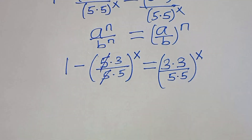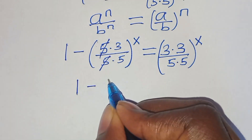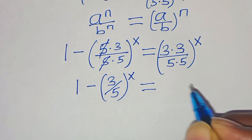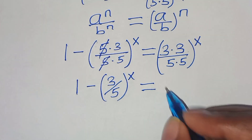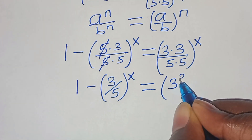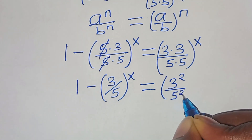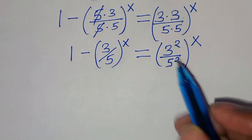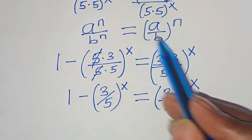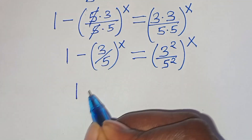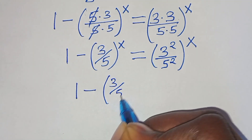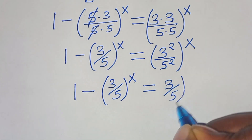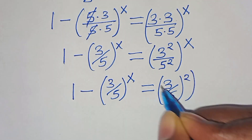This simplifies further. We can express 3 times 3 as 3 to the power of 2, divided by 5 to the power of 2, raised to the power of x. Applying this exponent property again, this implies that we have 1 minus (3/5) raised to the power of x, equal to (3/5) raised to the power of 2, then raised to the power of x.